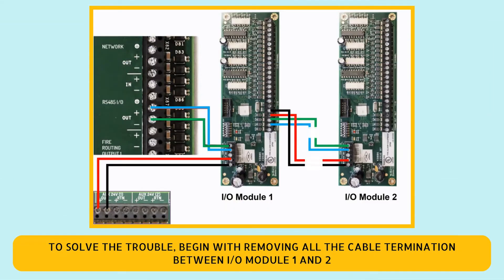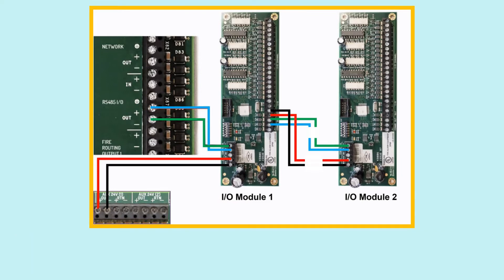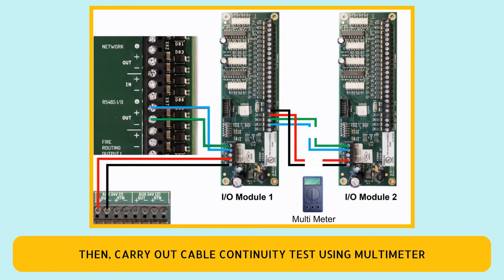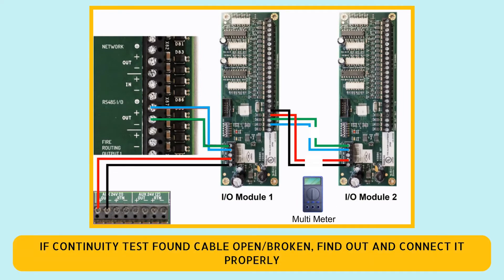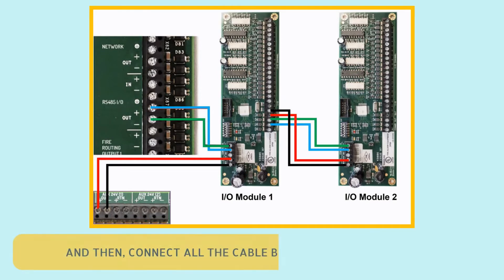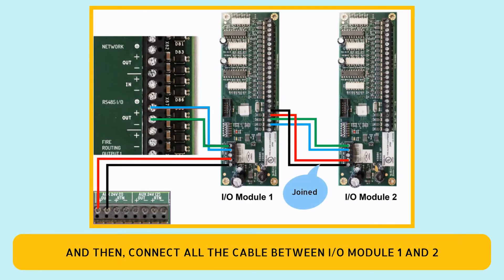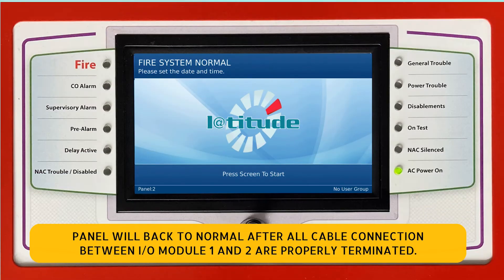To solve the trouble, begin by removing all cable terminations between I.O. module 1 and 2. Then carry out a cable continuity test using a multimeter. If the continuity test finds the cable open or broken, find and connect it properly. Then reconnect all cables between I.O. module 1 and 2. The panel will return to normal after all cable connections between I.O. module 1 and 2 are properly terminated.